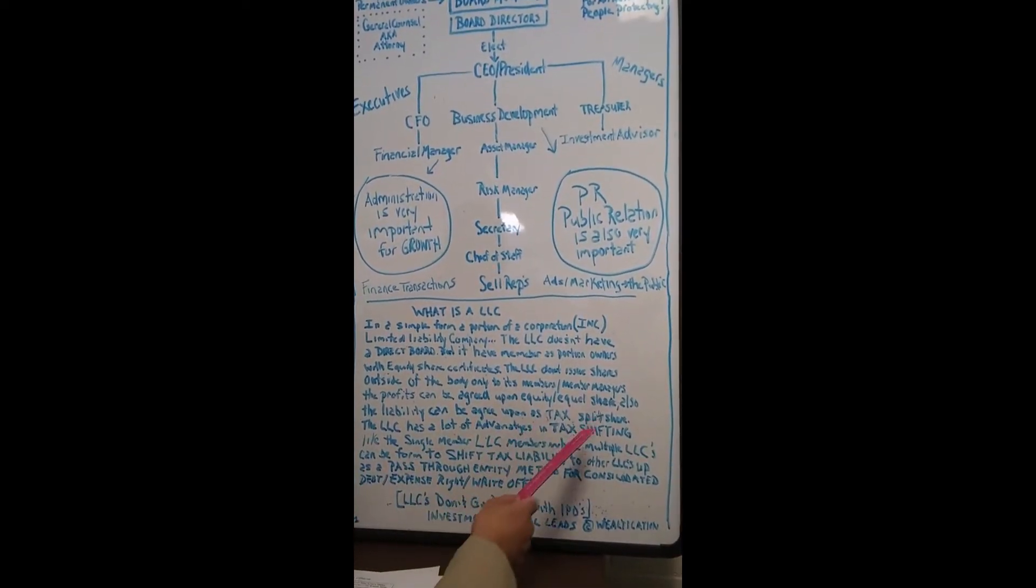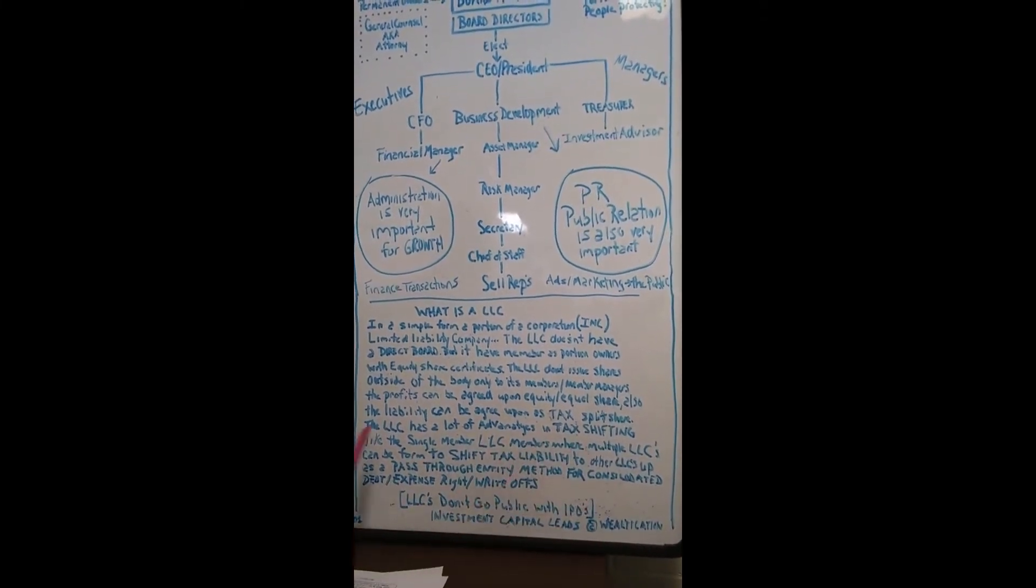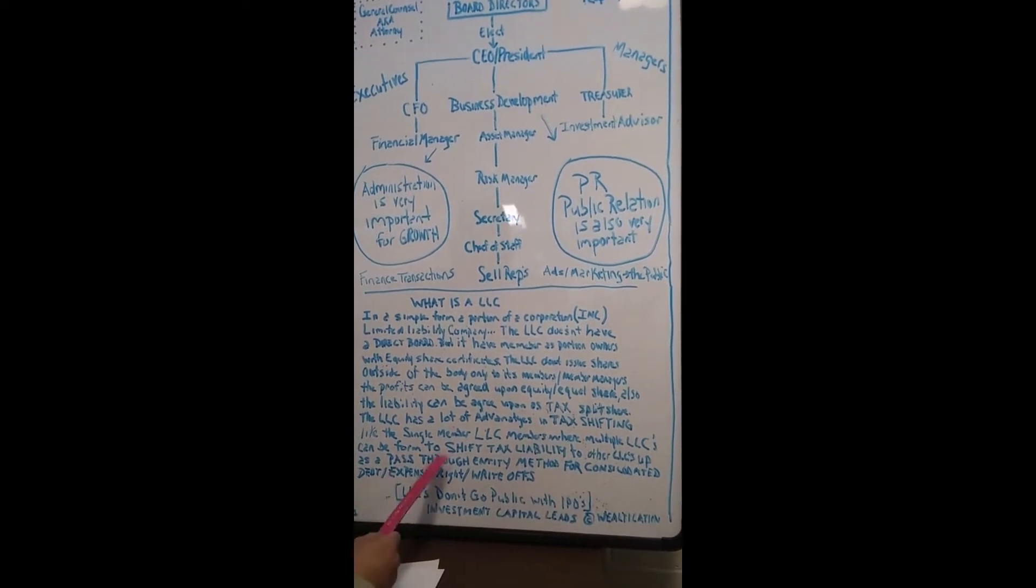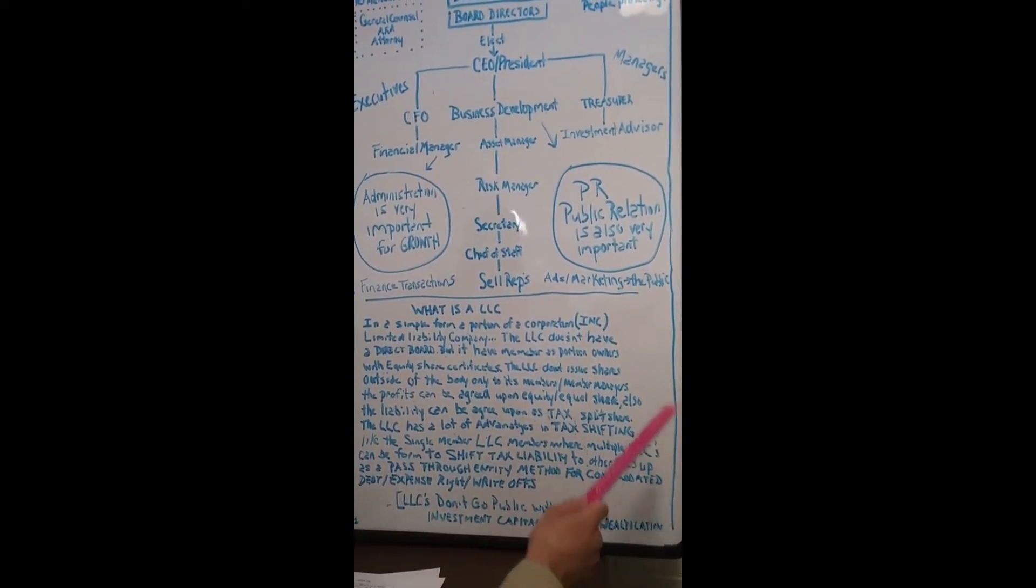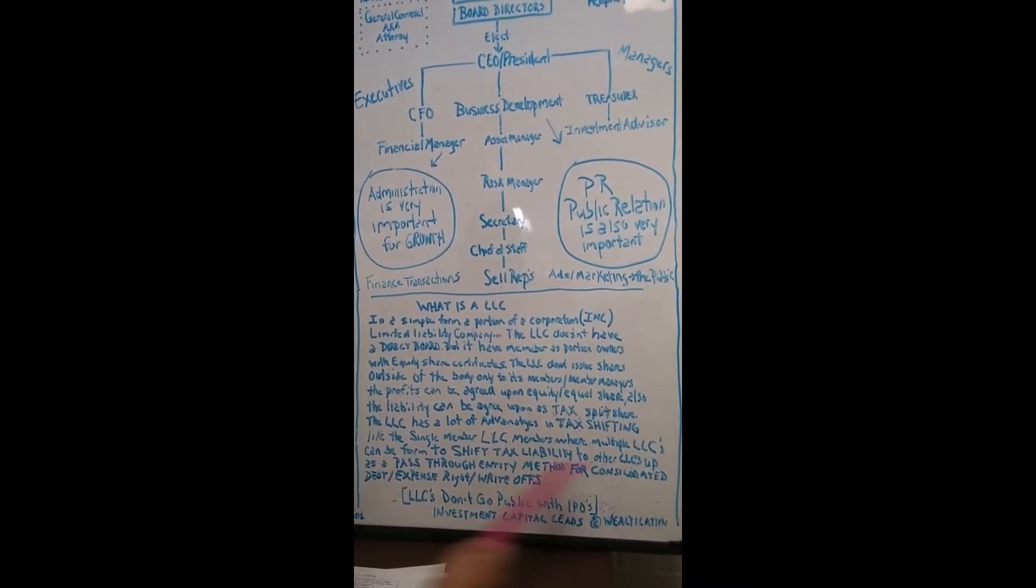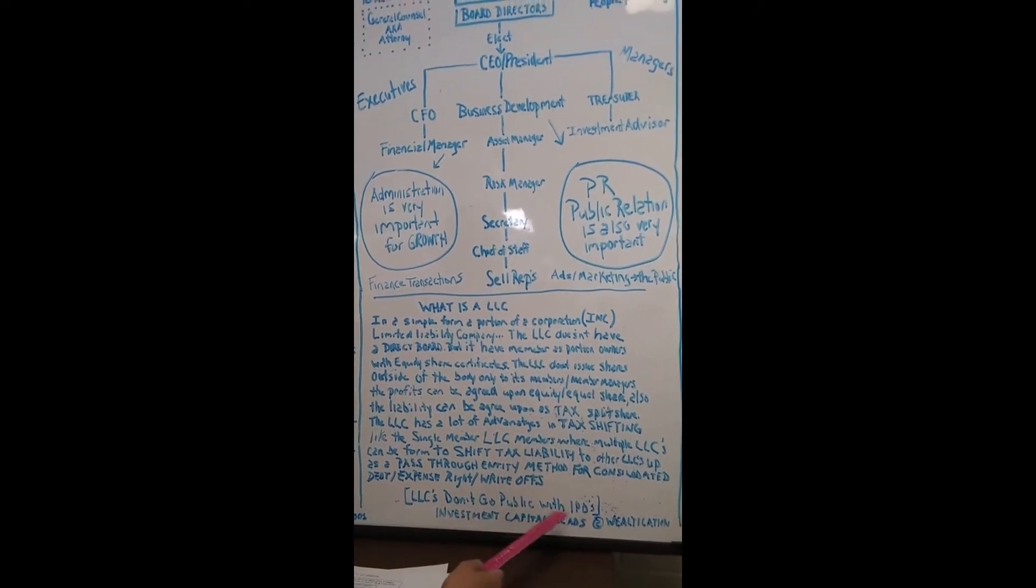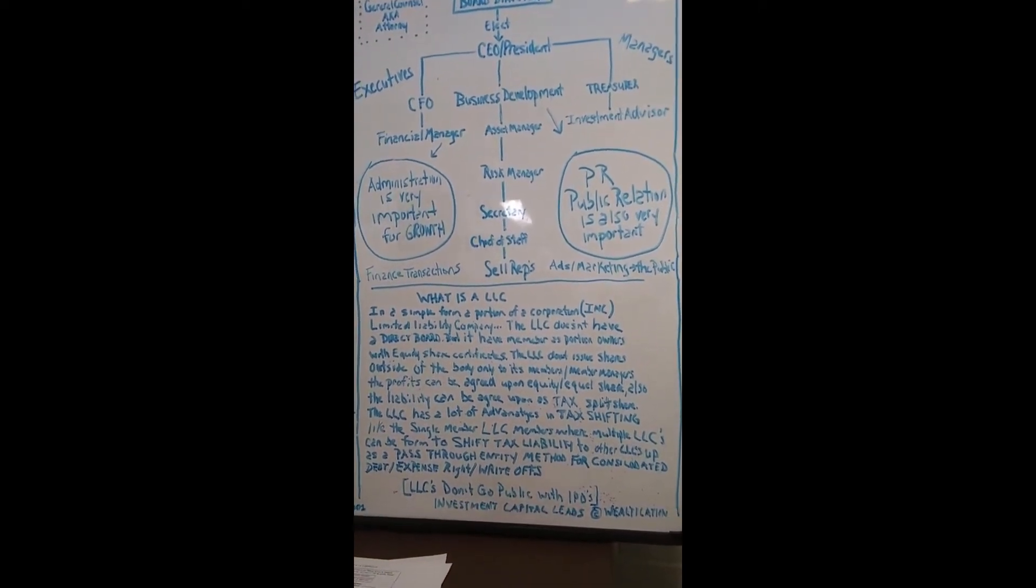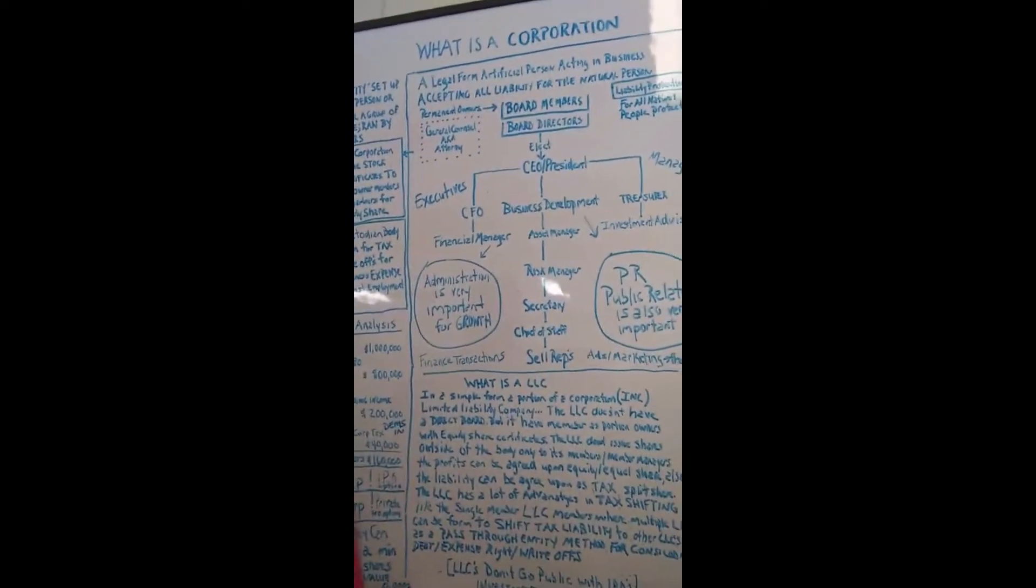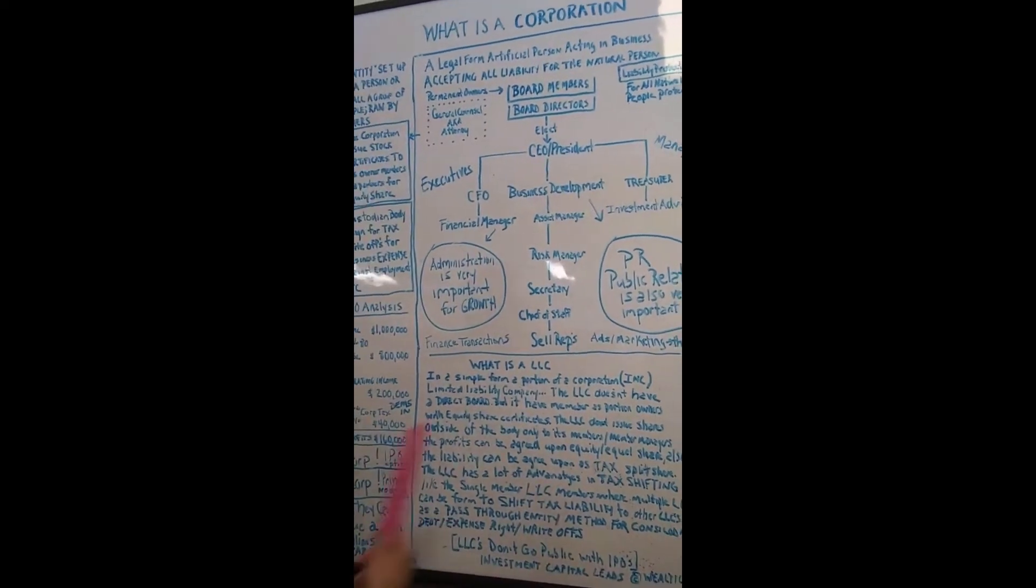Also, the liability can be agreed upon a tax split share. The LLC has a lot of advantage in tax shipping, like the single member LLC members, where multiple LLCs can be formed to ship tax liability to other LLCs and pass-through entity members for to consolidate debt and expense write off. The LLC don't go public with IPOs, but it keep the money inside among its members versus the C public. You decide you want to go public one day. I'll start off public. C public.